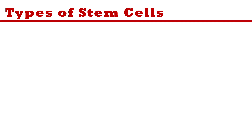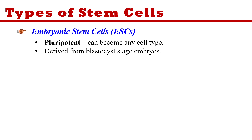Now, the types of stem cells. The first type is embryonic stem cells. These stem cells are present in the embryo — you can get them from the blastocyst stage. These stem cells are pluripotent, meaning they can change into any cell type.